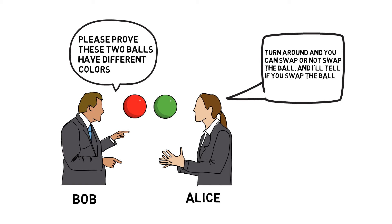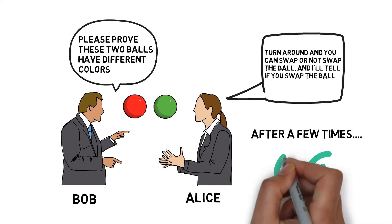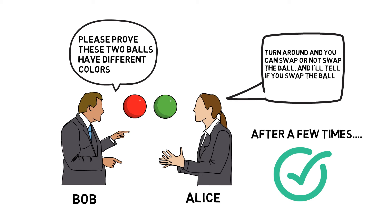Then Bob will ask Alice to identify if he has swapped the balls. Since Alice doesn't have color blindness, she can correctly tell Bob the color of the balls in his hands. After a few rounds, if Alice can always reply correctly, Bob will know the two balls have different colors because the possibility of failure is very low.